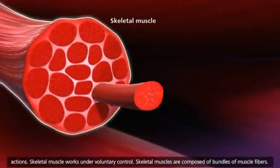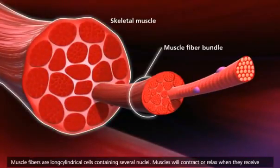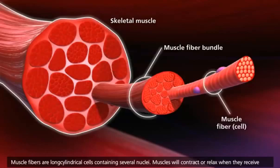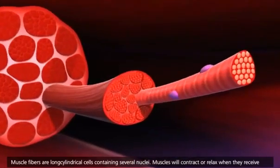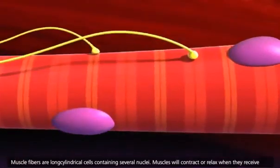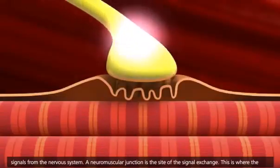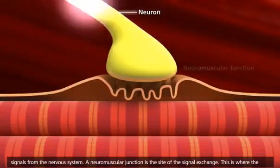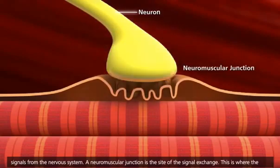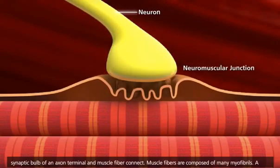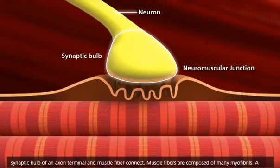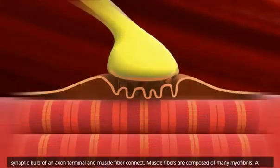Skeletal muscles are composed of bundles of muscle fibers. Muscle fibers are long cylindrical cells containing several nuclei. Muscles will contract or relax when they receive signals from the nervous system. A neuromuscular junction is the site of the signal exchange, where the synaptic bulb of an axon terminal and muscle fiber connect.